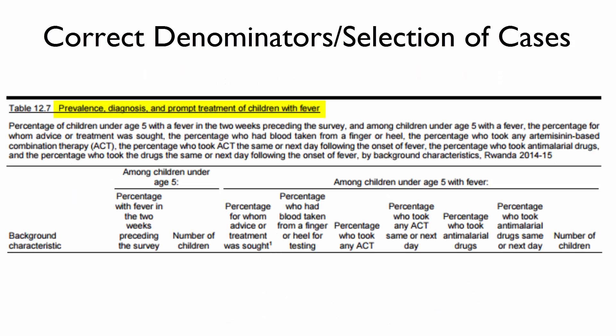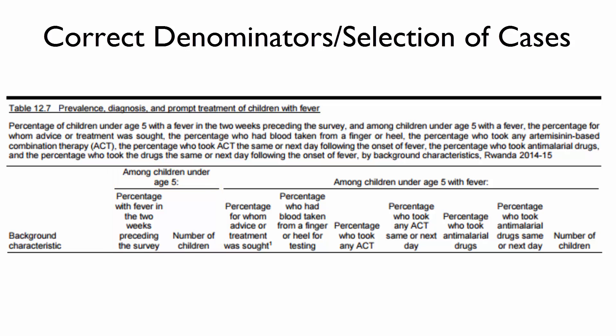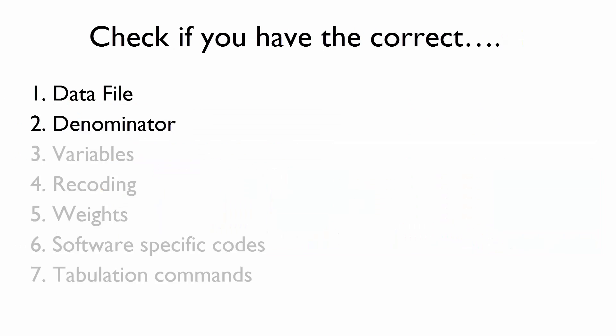Here is a table on prevalence, diagnosis, and prompt treatment of children with fever from the 2014-15 Rwanda DHS. Who is in this table? The table includes children under age 5, so it uses the KR file. The first two columns include all children under age 5 as the denominator. The denominator for the last 7 columns are children under age 5 with fever in the 2 weeks preceding the survey. The denominator is limited to children with fever because questions on diagnosis and prompt treatment were only asked for kids with fever in the 2 weeks preceding the survey. If you are trying to match the highlighted percentages, you will not properly match the table unless you restrict your analysis to children with fever.